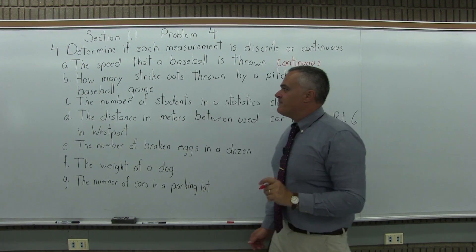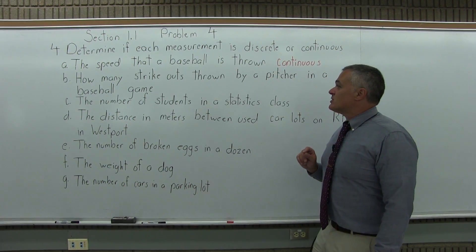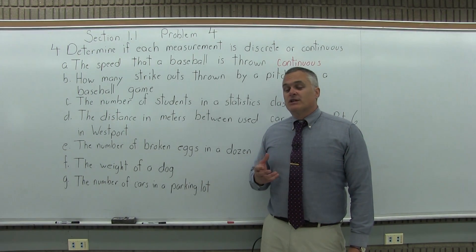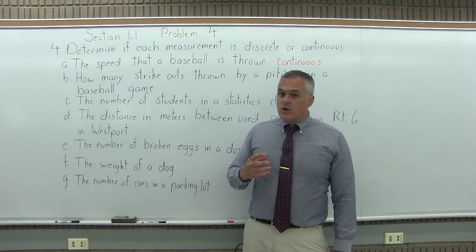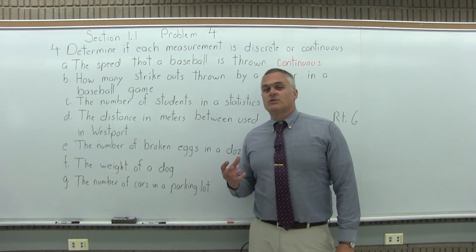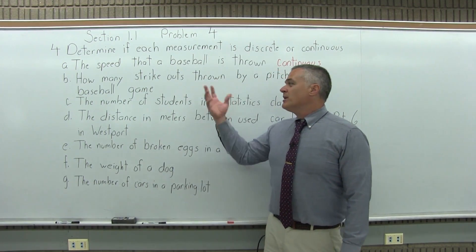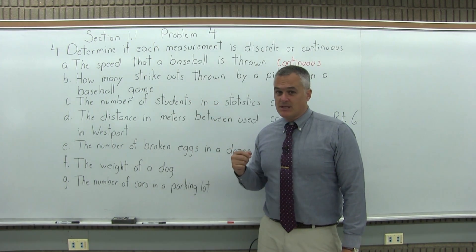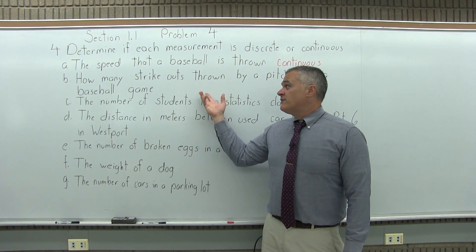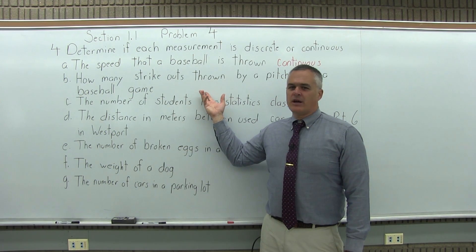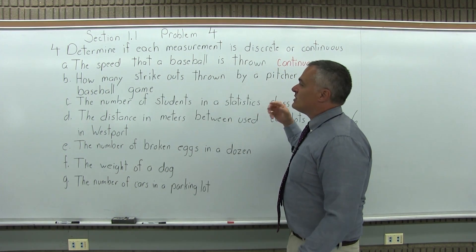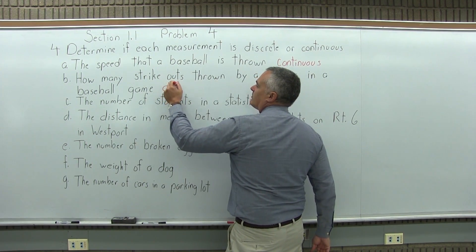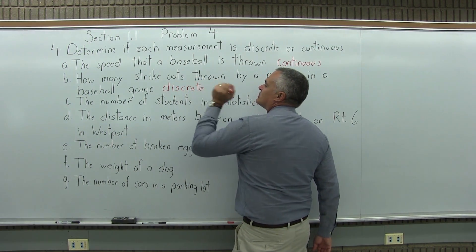Part B: how many strikeouts thrown by a pitcher in a baseball game? Can you have certain numbers where you can always go in between, or are you going to have certain numbers where you can't? Well, how many strikeouts could a pitcher throw — let's say five strikeouts, maybe six. Could a pitcher throw 5.2 strikeouts? No, they couldn't. So that makes it discrete. You can find numbers where you cannot have an answer in between, so the number of strikeouts in a baseball game is discrete.